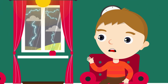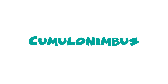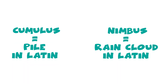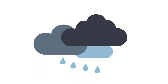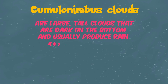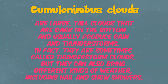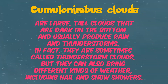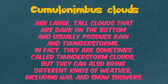and sometimes hail. What is a cumulonimbus cloud? The word cumulonimbus is formed from two words: cumulus, meaning power in Latin, and nimbus, meaning rain cloud. These words describe a cumulonimbus cloud perfectly because these clouds usually bring rain or other wet weather. Cumulonimbus clouds are large, tall clouds that are dark on the bottom and usually produce rain and thunderstorms.